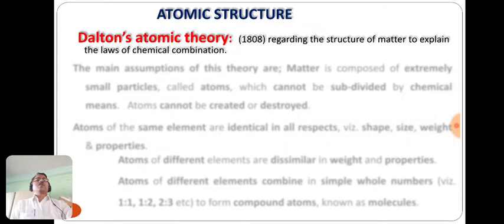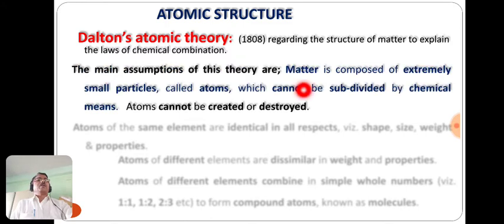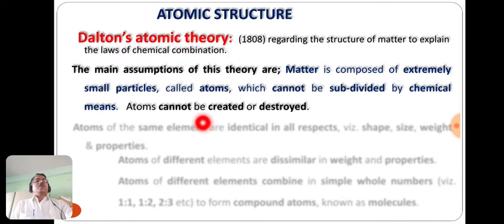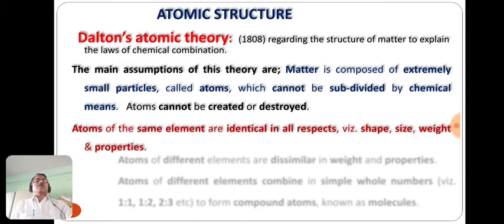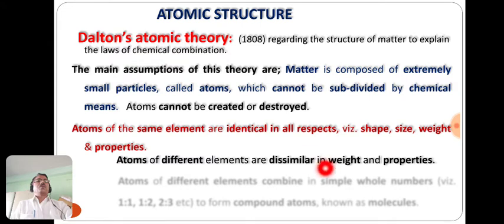The first topic is Dalton's atomic theory. John Dalton in 1808, regarding the structure of matter, explained the laws of chemical combination. The main assumptions of this theory are: matter is composed of extremely small particles called atoms, and these atoms cannot be subdivided by any chemical means. These atoms can neither be created nor destroyed. Atoms of the same element are identical in shape, size, weight and properties.